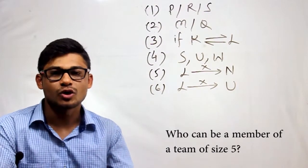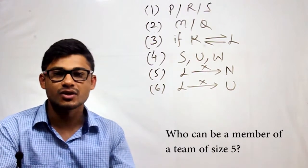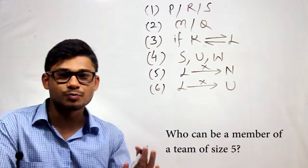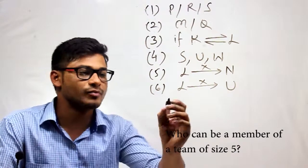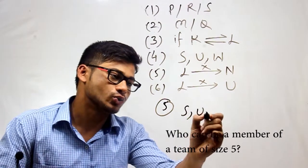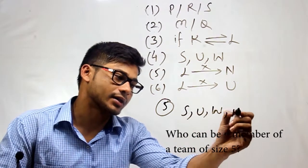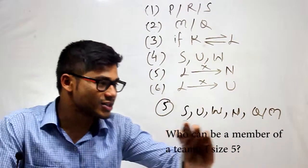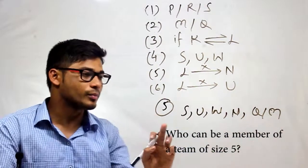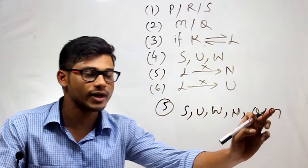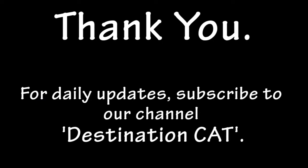Question five asks: who can be a member of a team of size 5? As discussed in the first question, the largest possible team contains 5 members, and that team was S, U, W, N and Q or M. From the given options, only M appears in this largest possible team. So the answer is M.